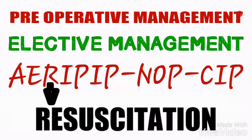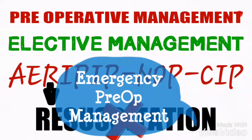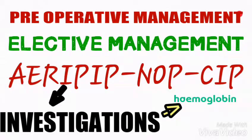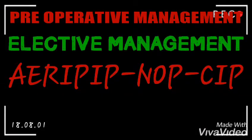Resuscitation is not focused on under elective management — it is more relevant to emergency pre-op management. Moving to Investigations: you will take blood and consider the hemoglobin level. For females, the Hb level should be between 10 and 12, and for males it should be in the range of 14 to 16. You will also do a full blood count, X-rays, and any other investigations necessary for the patient.